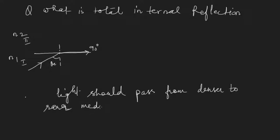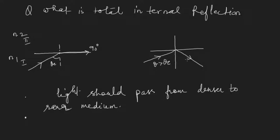An important condition for total internal reflection to happen is that the light should pass from a denser to a rarer medium. Another condition is that when the light is incident at the critical angle, the angle of refraction is 90 degrees. If the angle of incidence is made greater than the critical angle — when theta is greater than theta-c — the light totally internally reflects. This is the second condition for total internal reflection.